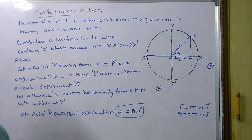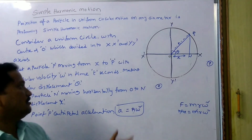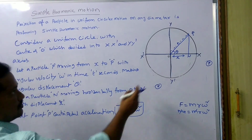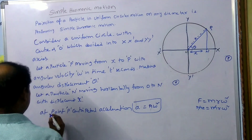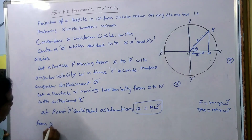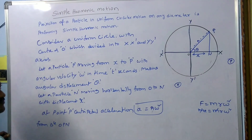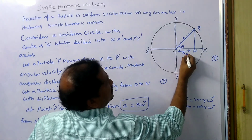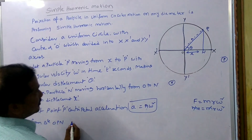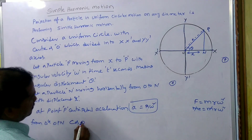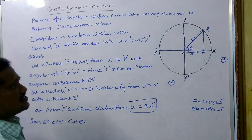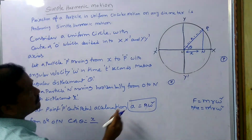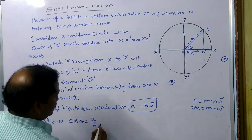Now, from triangle OPN: this angle is theta, ON is the adjacent side, OP is the hypotenuse. So cos θ = adjacent / hypotenuse. From the diagram, cos θ = x / A. Now, you have to note the acceleration carefully.